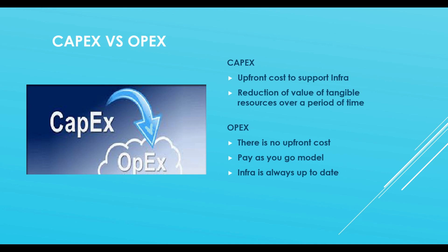OpEx, on the other hand, has no upfront cost — it is a pay-as-you-go model where you pay for whatever you're using. Infrastructure is always up to date and you don't have to spend time and money maintaining the resources. CapEx stands for Capital Expenditure and is the model used with on-premises servers. OpEx stands for Operational Expenses and comes into picture when you move all resources to the cloud.